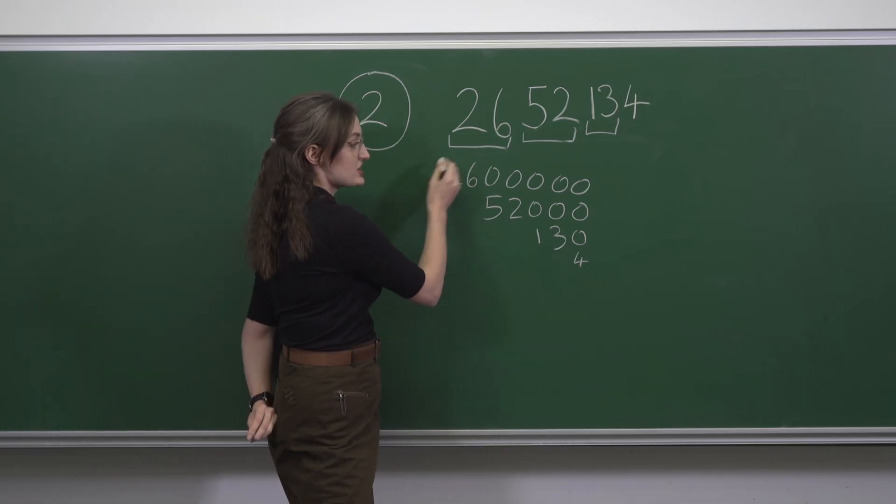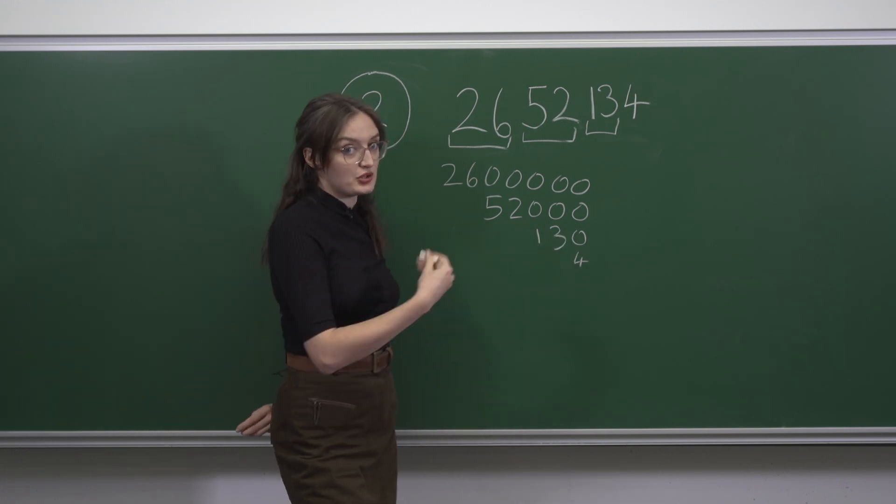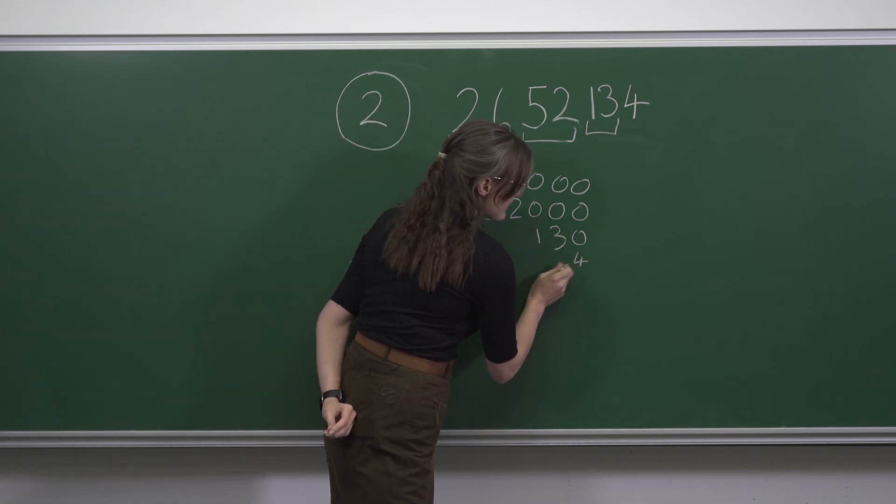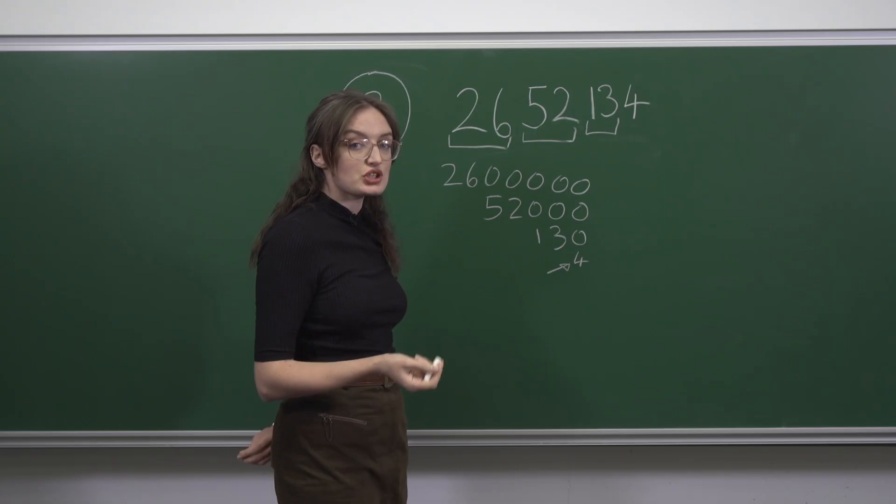So each of these numbers is a multiple of 13. So their sum is a multiple of 13, and all that's left as a remainder is the 4, which is option D.